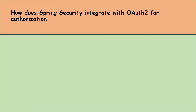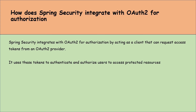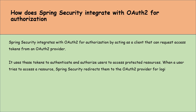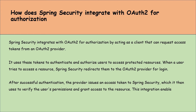In this video, I am covering the most important Spring Security interview questions. How does Spring Security integrate with OAuth2 for authorization? Spring Security integrates with OAuth2 by acting as a client that requests access tokens from an OAuth2 provider. It uses these tokens to authenticate and authorize users to access protected resources. When a user tries to access a resource, Spring Security redirects them to the OAuth2 provider for login. After successful authentication, the provider issues an access token, which Spring Security uses to verify the user's permissions and grant access to the resource.